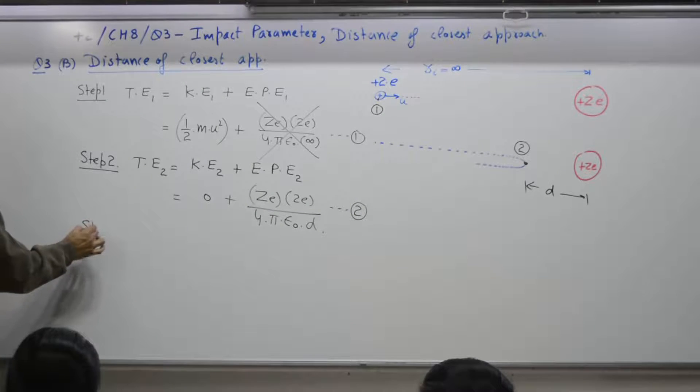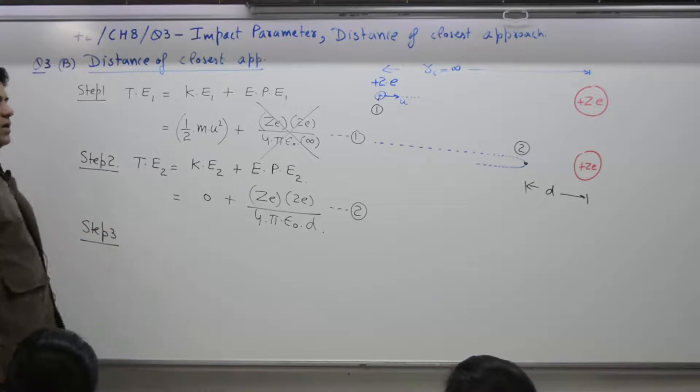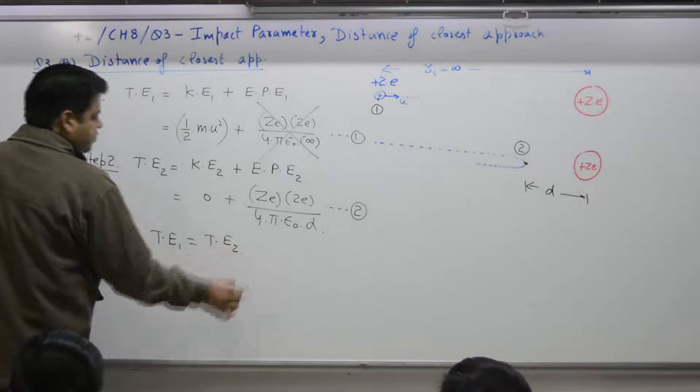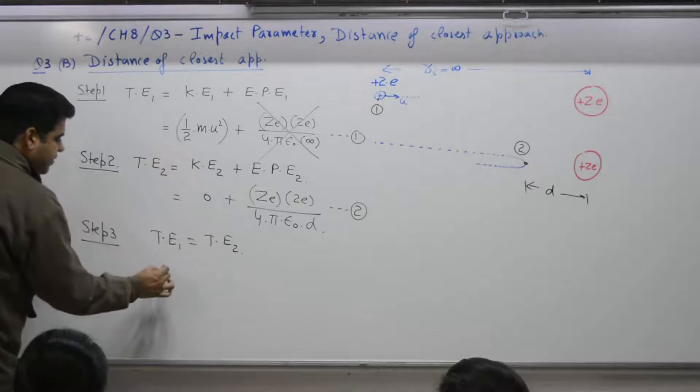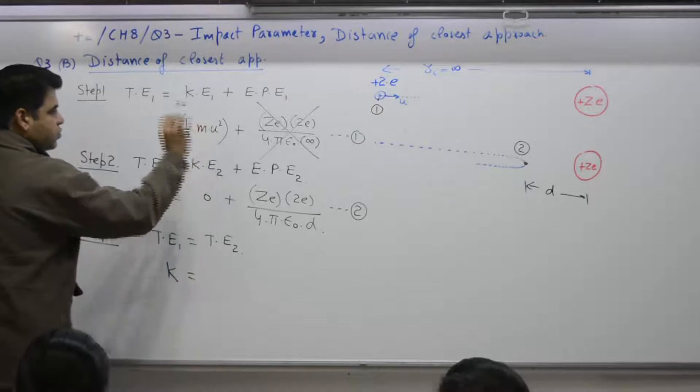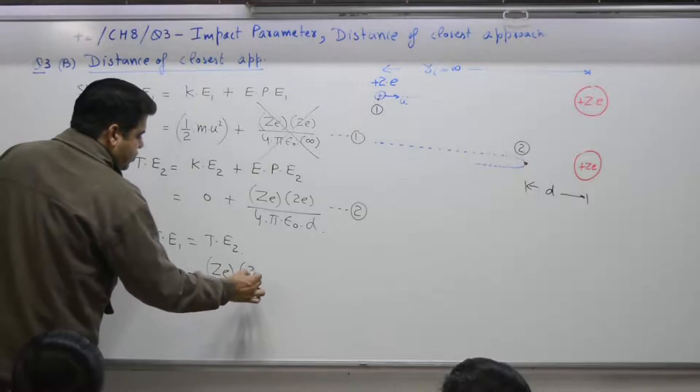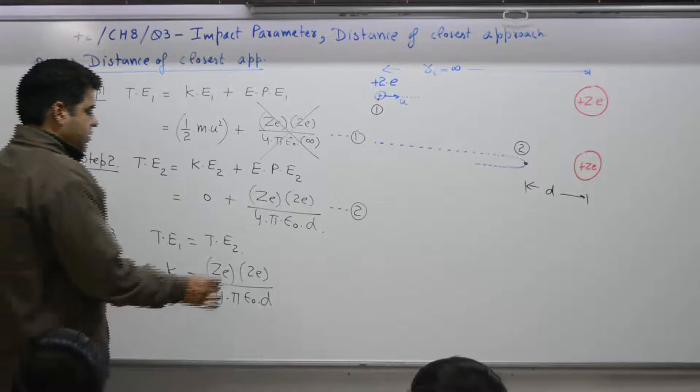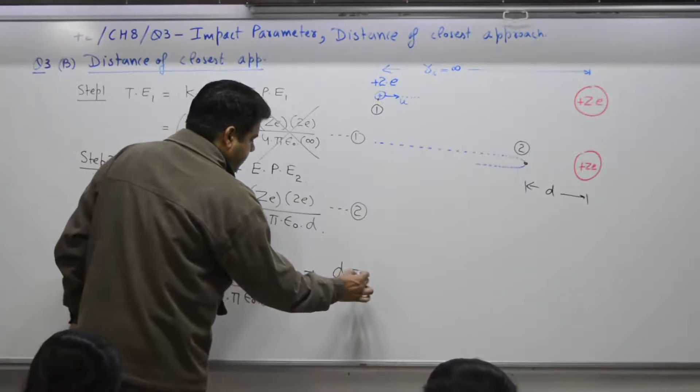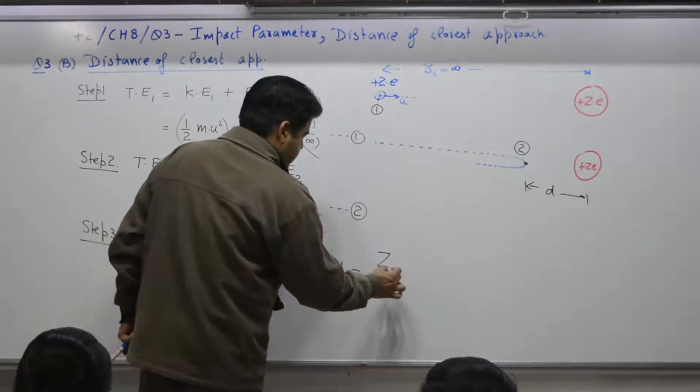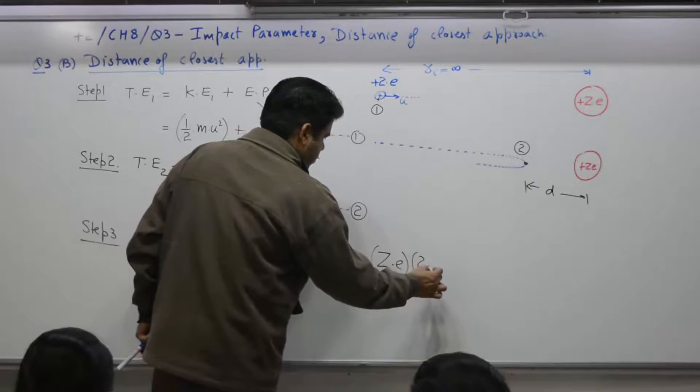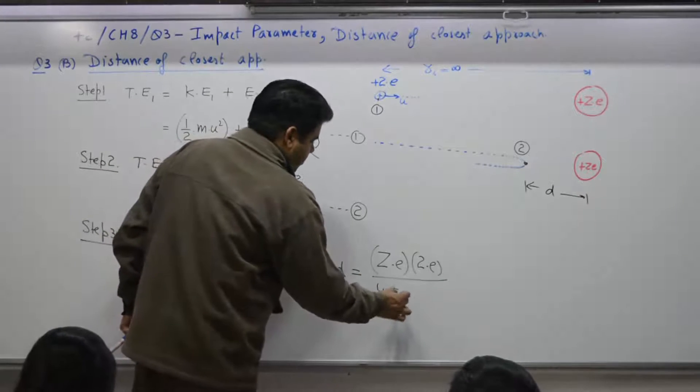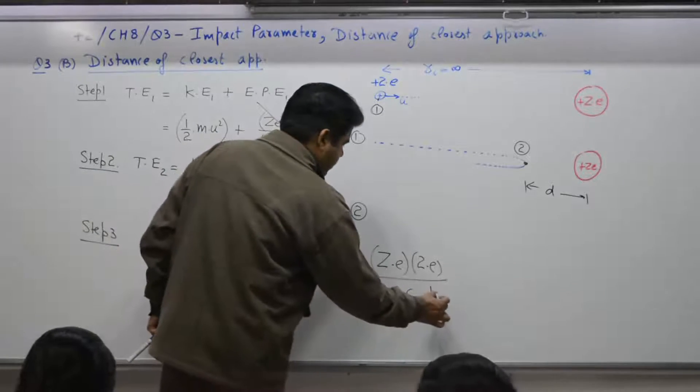If you term this as equation number 1, this as equation number 2, step 3 is what? Law of conservation of energy. Total energy at 1 is equal to total energy at 2. So, this kinetic energy, if I term this kinetic energy as k, 1 by 2 mu square is equal to Ze into 2e over 4 pi epsilon naught d. What we want to find out is d, d is equal to what? Yes. Ze into 2e divided by 4 pi epsilon naught into k.